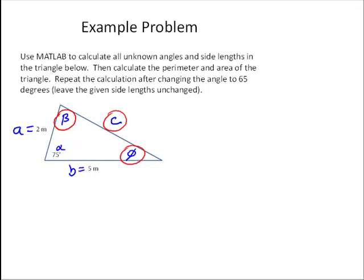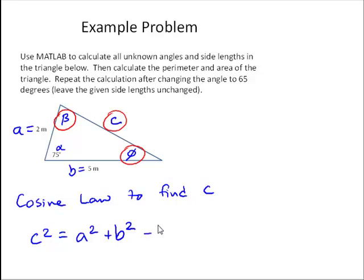Well, first of all, to find C, we can use the cosine law. To find C, that is C squared is equal to A squared plus B squared minus 2 times A times B times the cosine of alpha. So there's the cosine law.